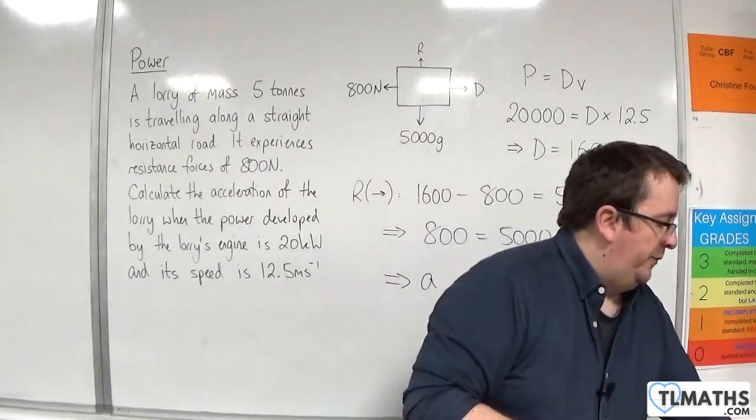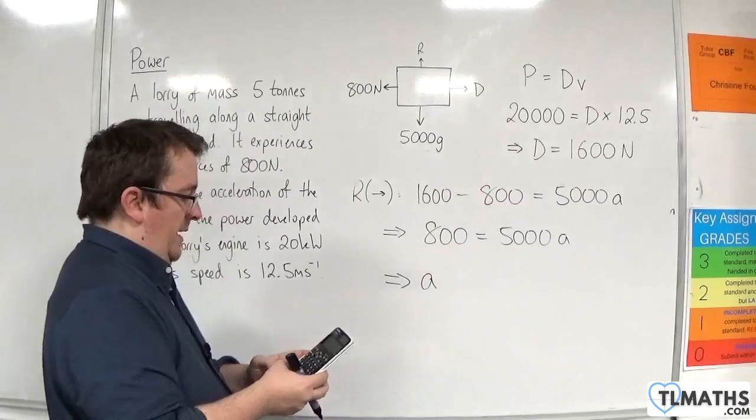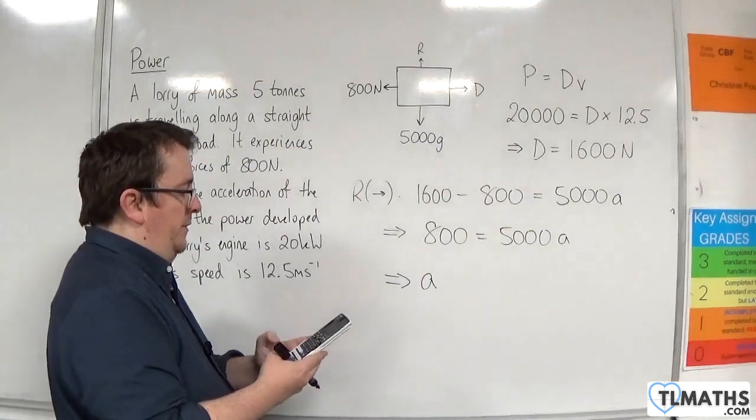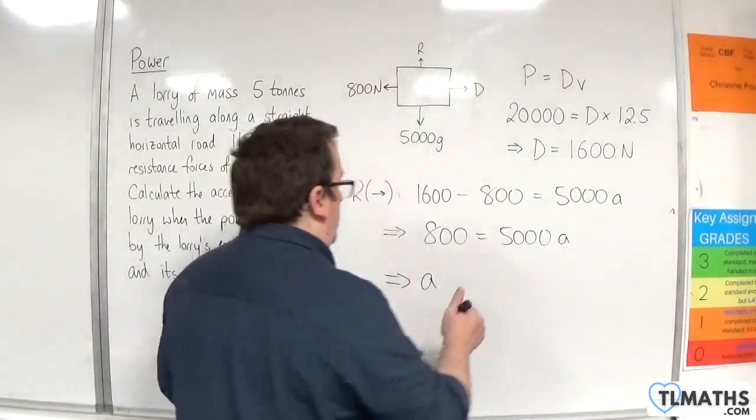So if I now divide both sides by 5,000. So 800 divided by 5,000. And that's equal to 0.16.